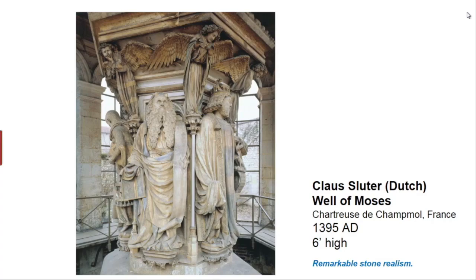This is the Well of Moses by Claus Sluter — an amazing sculpture. It was actually a medieval pond that was the source of water for a monastic community. On the top of it was a crucifix that's no longer there. But I want you to see how capable these northern sculptors were — it's an amazing, complex, beautiful image that cares about the real world.